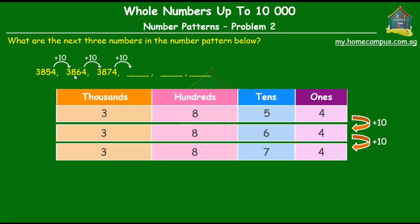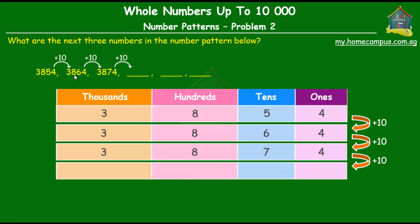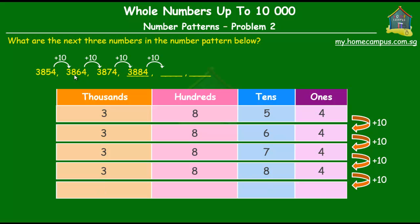Simple! So let's find out the first missing number. We add 10 to the previous number: no difference in the ones, there's a change in the tens place by one, no change in the hundreds place, and no change in the thousands place. So the first missing number is 3884. Similarly, to get the next missing number, we add 10 again and we get 3894.